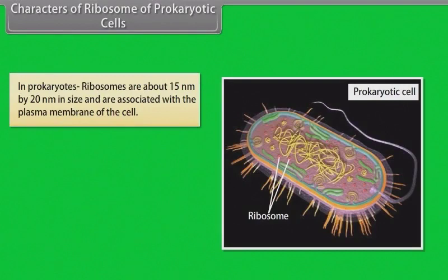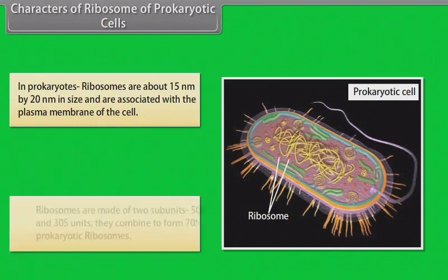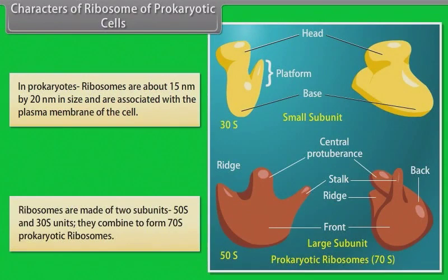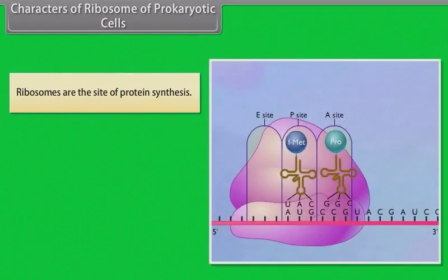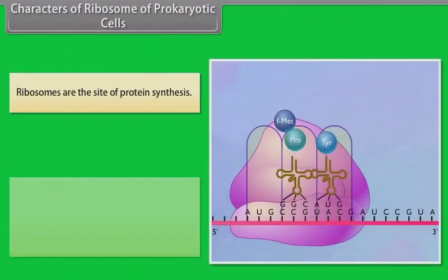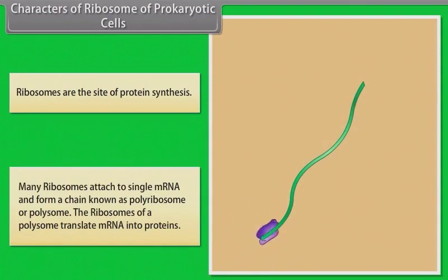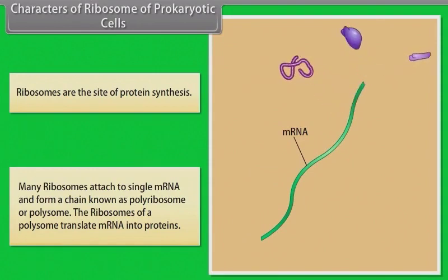Characters of ribosomes in prokaryotic cells: In prokaryotes, ribosomes are about 15 nm by 20 nm in size and are associated with the plasma membrane. Ribosomes are made up of two subunits — 50S and 30S — which combine to form 70S prokaryotic ribosomes. Ribosomes are the site of protein synthesis. Many ribosomes attach to a single mRNA to form a chain known as a polyribosome or polysome, which translates mRNA into proteins.